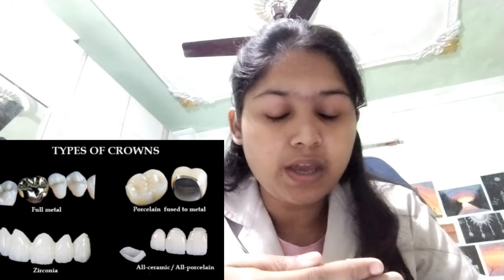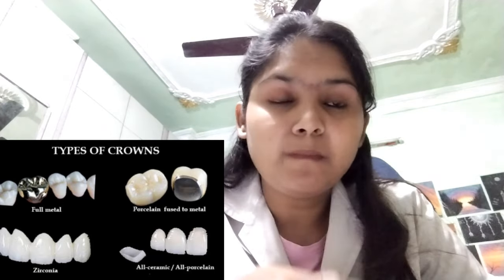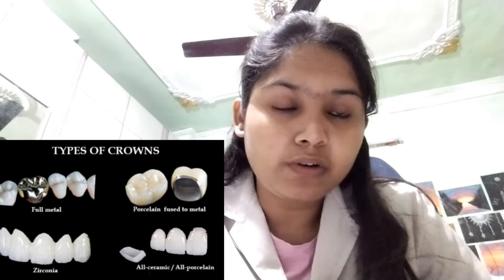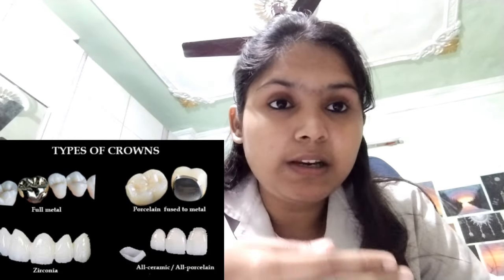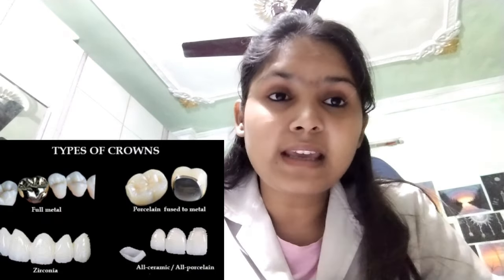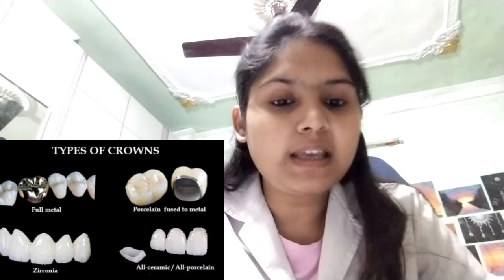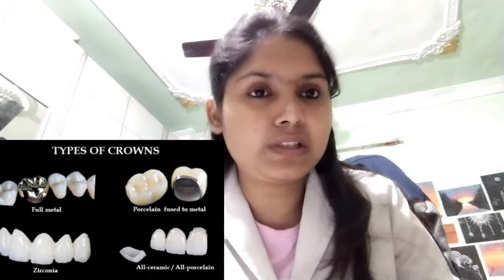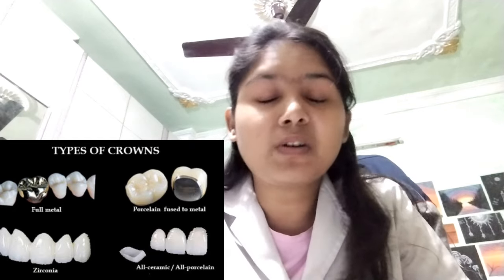When the teeth are visible, you have two options. The first option is PFM — Porcelain Fused Metal. As you can see in the photo, the upper layer is made of porcelain and the inner layer is made of metal, which gives it good strength. This crown is made of two materials, giving it both aesthetics and durability. PFM crown is the most commonly used crown and is also affordable.